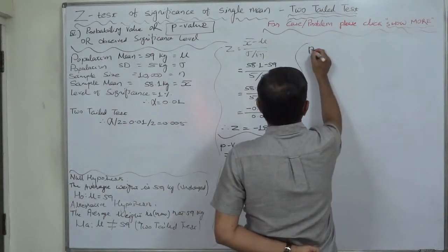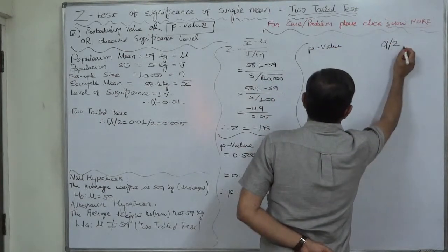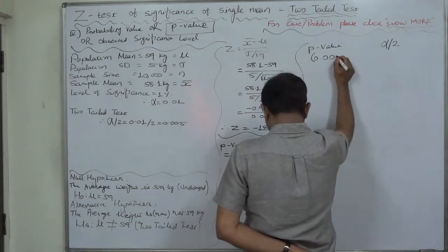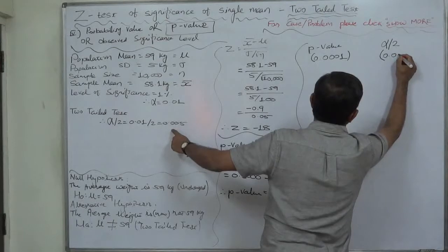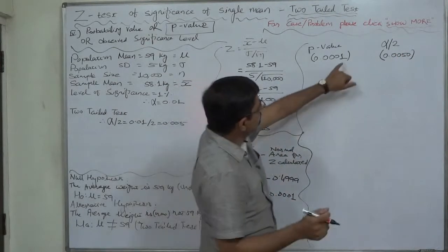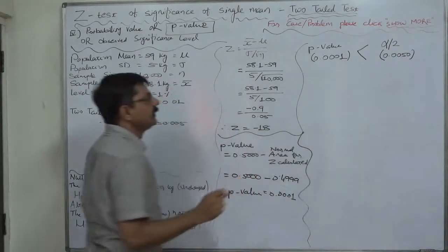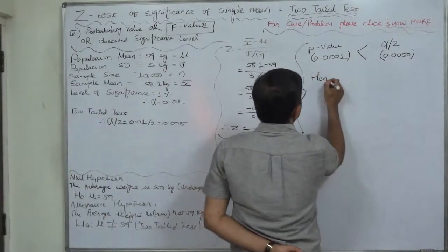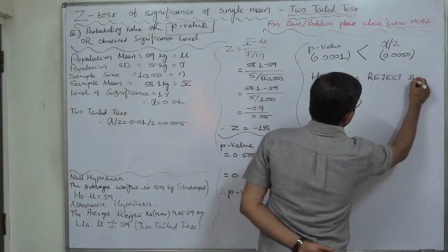So, p-value comes to 0.0001. Now, p-value and in case of two-tailed test alpha by 2, p-value is 0.0001 and value of alpha by 2 in our case is 0.005. It is something like comparison between 1 and 50. That means, p-value is less than the alpha by 2. Hence, also, we reject null hypothesis.